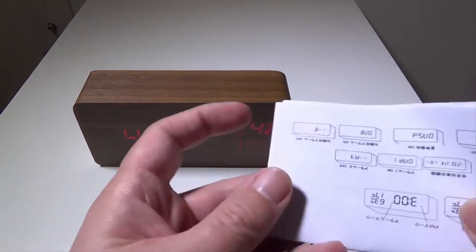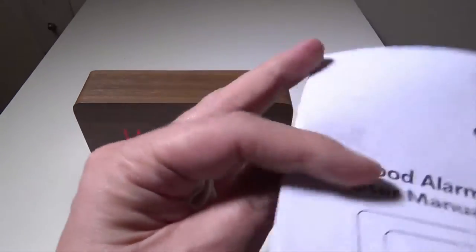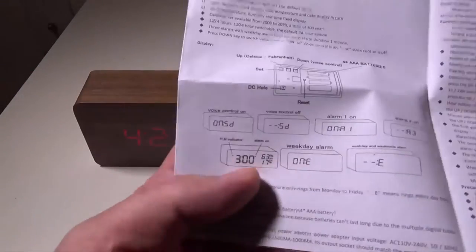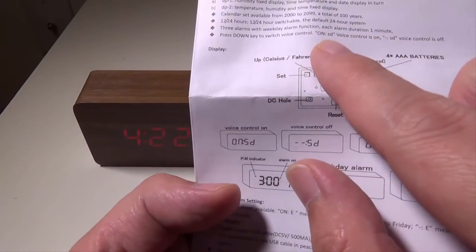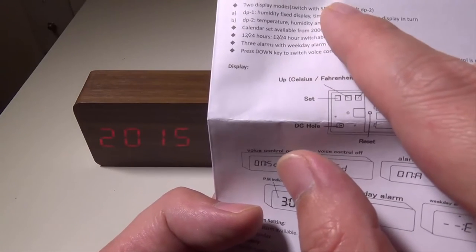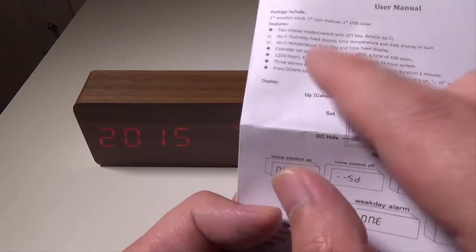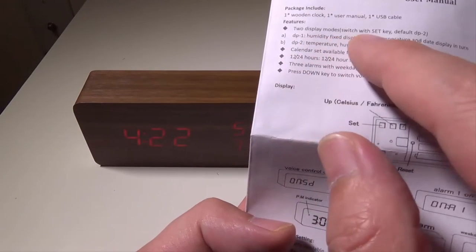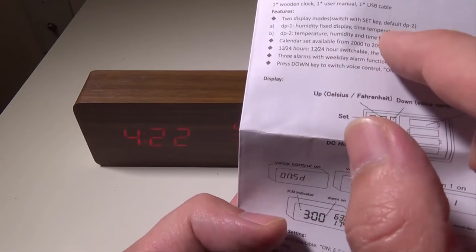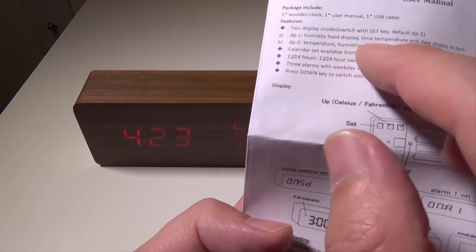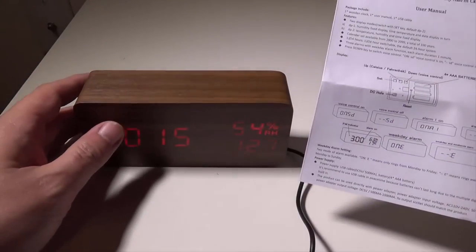They give you a nice little booklet here for the Koo Woo wood alarm clock. They show you two display modes that switch with the set key. Default is DP2. I changed mine over to DP1. DP1 is humidity fixed display with time, temperature, and date displayed in turns. DP2 is temperature, humidity, and time fixed.